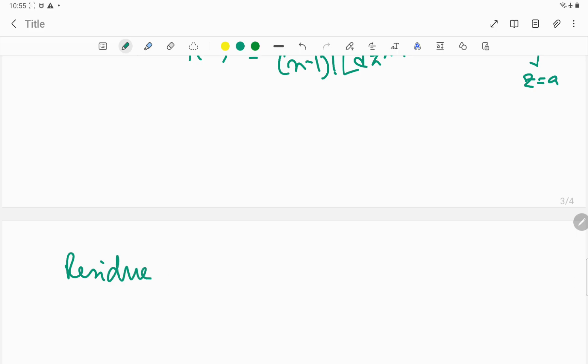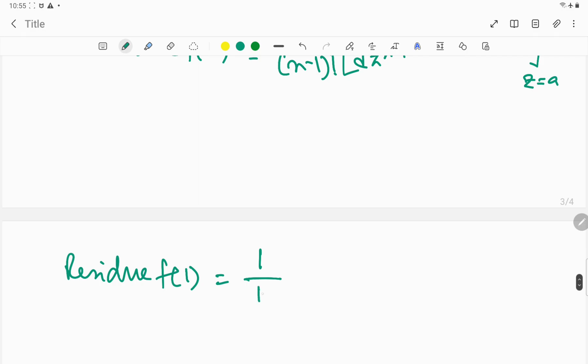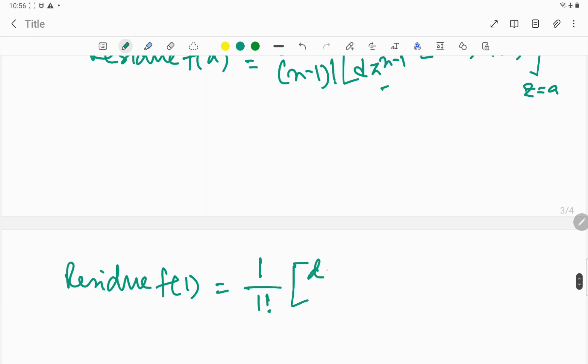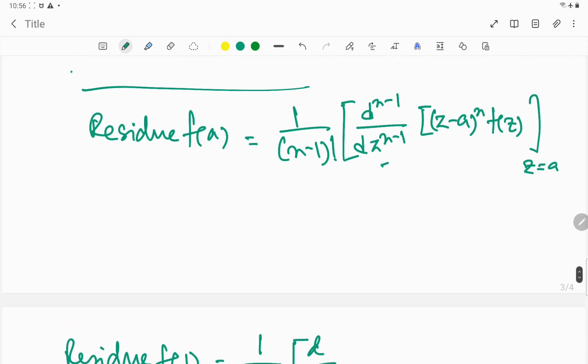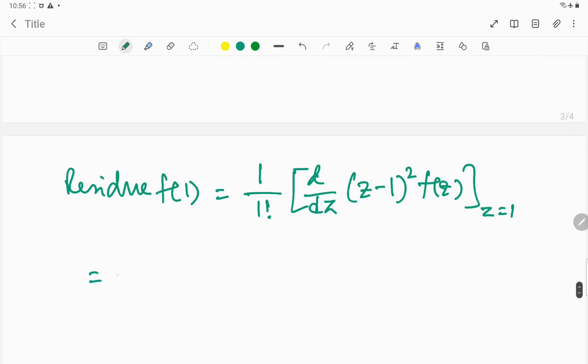Residue at z equal to 1. I told you this is a second order pole, so I can write 1 divided by (2-1) factorial, that is 1 factorial. We have to do this derivative, and n equals 2, so d/dz. Our function was z minus a to the power n, so here we write (z-1)² times f(z).